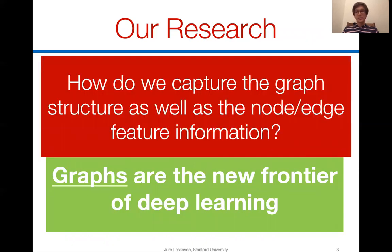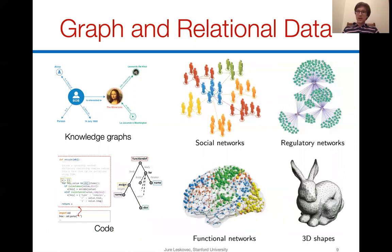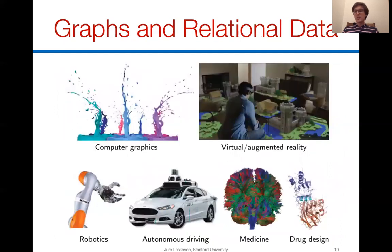The core question we are trying to answer is how we capture graph structure as well as node and edge attributes and feature information in a unified end-to-end trainable way. Graphs and relational data are very important across many applications: knowledge graphs, social networks and recommendations, gene regulatory and protein-protein interaction networks, computer code as graphs, functional brain networks, 3D shapes, and applications ranging from computer graphics to virtual reality, robotics, self-driving, medicine, and drug design.